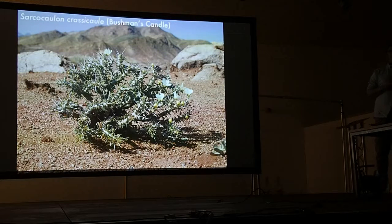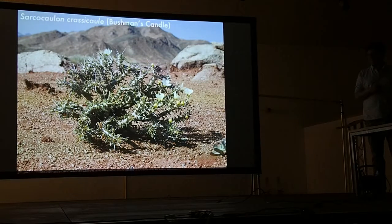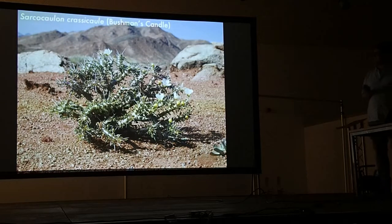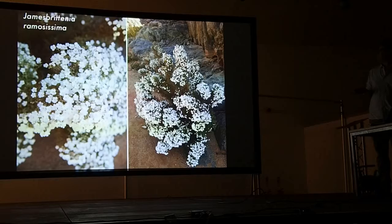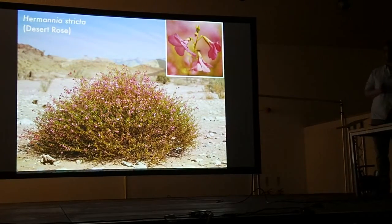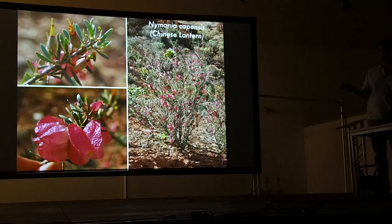Probably the only scary moment we had on the trip was in the Richtersveld on the day we first drove in — we got a puncture in the middle of nowhere. We had to change the tyre, took it off the back and jacked up the car, but then realised the bolts to fix the wheel weren't the right ones. Luckily there was one more tyre and the bolts were right, but it was pretty sketchy for a moment. Here are some more attractive plants from the Richtersveld: Jamesbrittenia browniorum, commonly known as the wedding flower; the desert rose, Hermannia stricta; and Nymannia capensis, which has really striking fruit capsules and very beautiful, understated flowers.